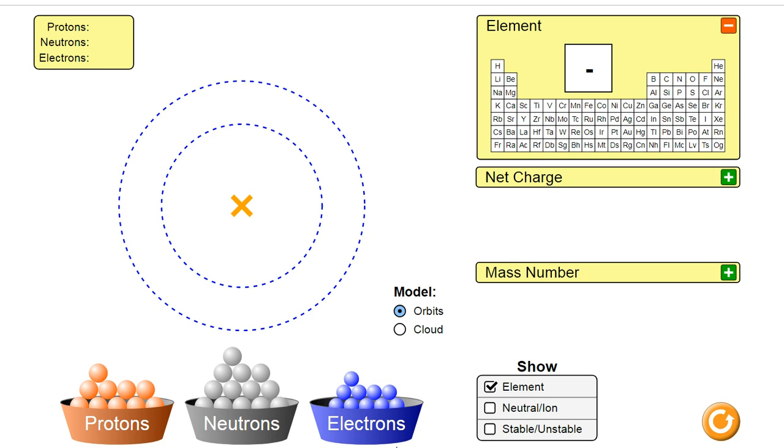protons. You can see down at the bottom my little tray of protons, neutrons, and electrons. The protons are going to go into that center part called the nucleus. And you can see that the second I place in a proton, it tells me that I've just created a